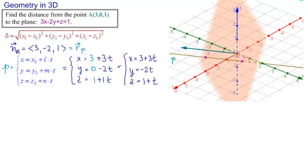So let's do that. So we have 3 times x, which is 3 plus 3t, minus 2 times y, minus 2t, plus z, which is 1 plus t, equal to 1. This is an equation in one unknown. We can solve it. So 9 plus 9t, plus 4t, plus 1, plus t, equals 1.